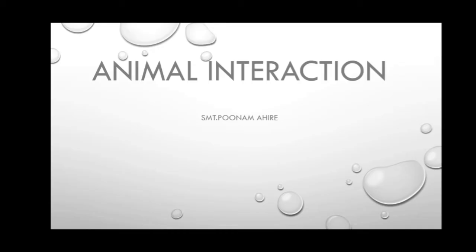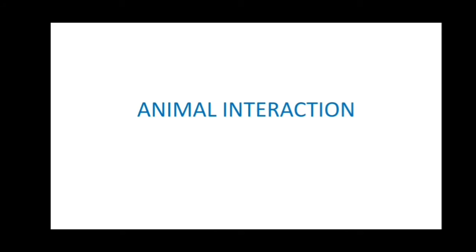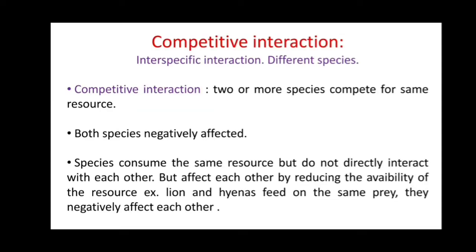In the last lecture we studied the main interaction, that is competition interaction and predator interaction or consumer-resource interaction. The competitor interaction is interspecific interaction, meaning the interaction between different species. When two or more species compete for the same resources, both species are negatively affected.